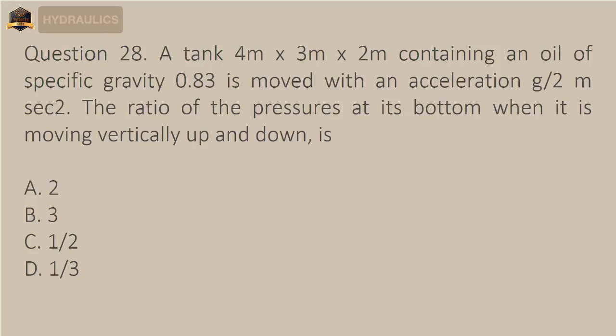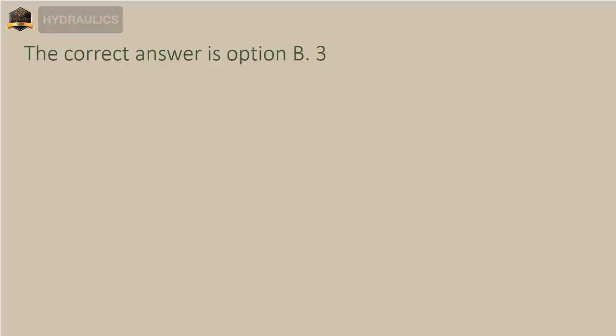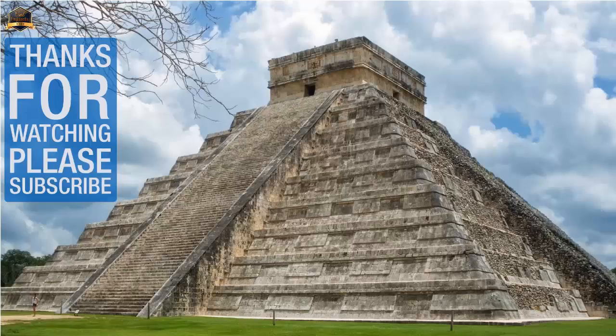Question 28: A tank 4m × 3m × 2m containing oil of specific gravity 0.83 is moved with an acceleration of g/2 m/s². The ratio of the pressures at its bottom when moving vertically up and down is — The correct answer is option B: 3.